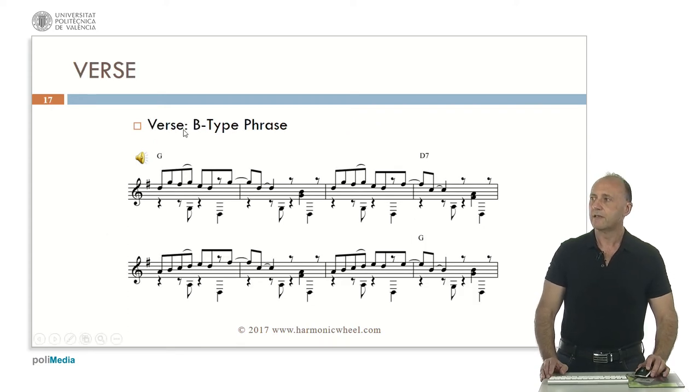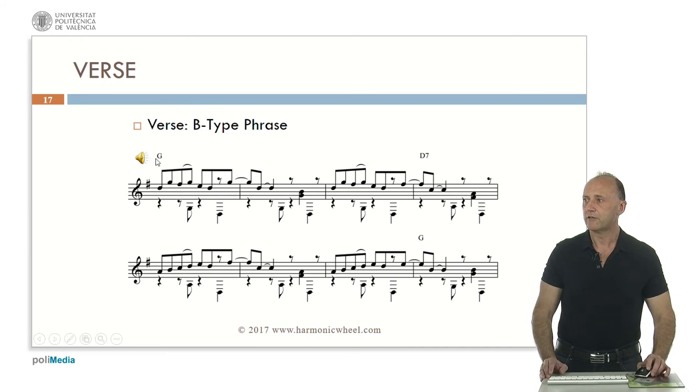And this is a verse, a B type phrase. One chord every three or four measures ending with a tonic chord G major. We can see the melody, some chords which are incomplete and with a syncopated rhythm. And the typical bass. Let's listen to it.